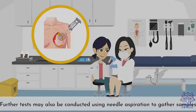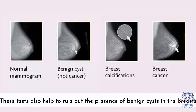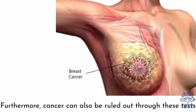Further tests may also be conducted using a needle aspiration to gather samples. These tests also help to rule out the presence of benign cysts in the breasts. Furthermore, cancer can also be ruled out through these tests.